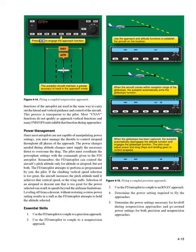The FD/autopilot attempts to perform as programmed by you, the pilot. If the climbing vertical speed selection is too great, the aircraft increases the pitch attitude until it achieves that vertical speed, or the wing stalls. Selection of an airspeed or descent rate that is too great for the power selected can result in speeds beyond the airframe limitations. Leveling off from a descent without restoring a cruise power setting results in a stall as the FD/autopilot attempts to hold the altitude selected.